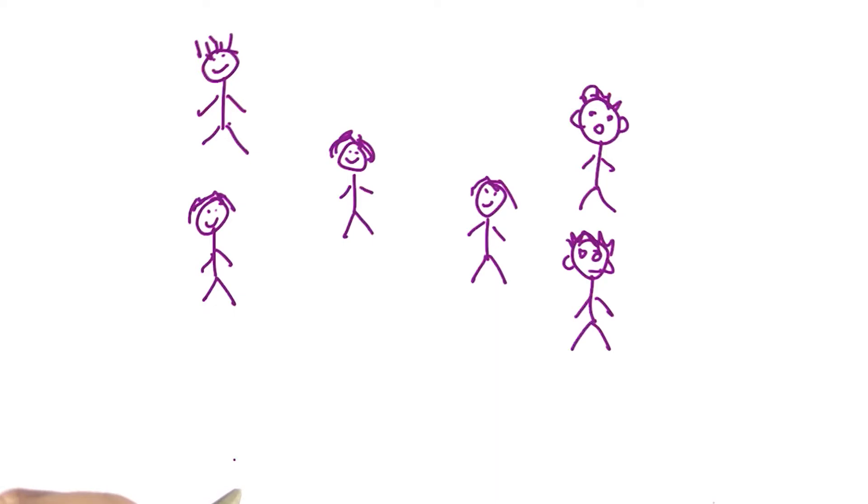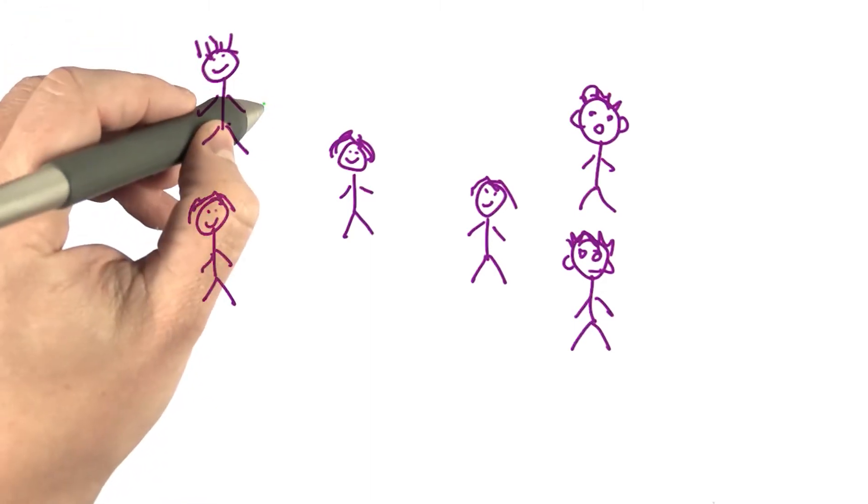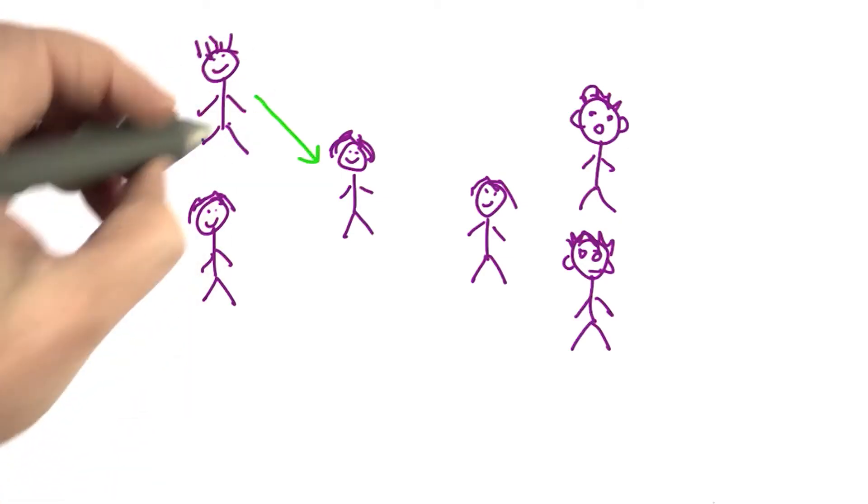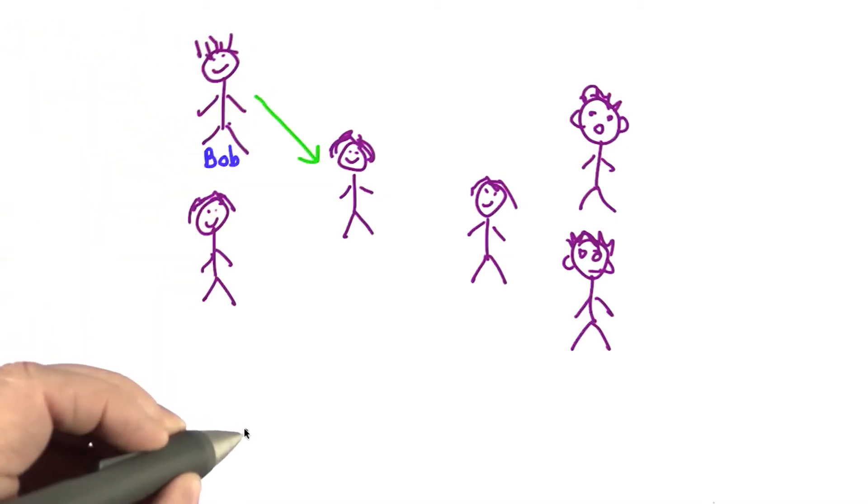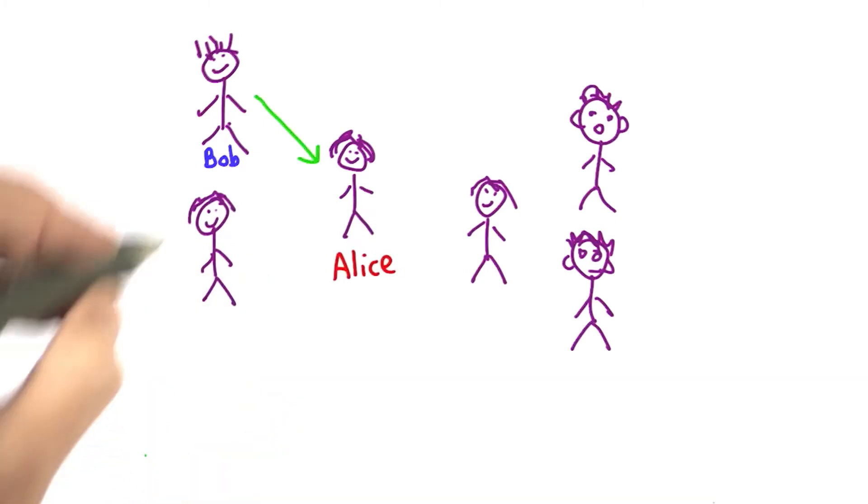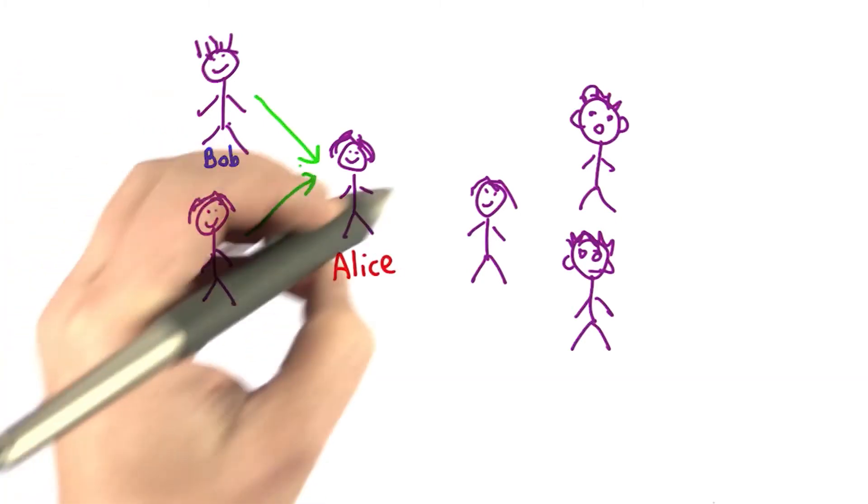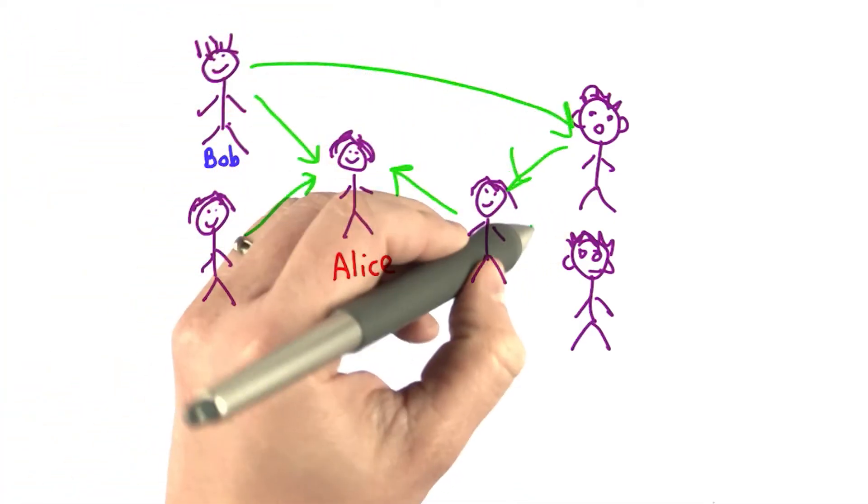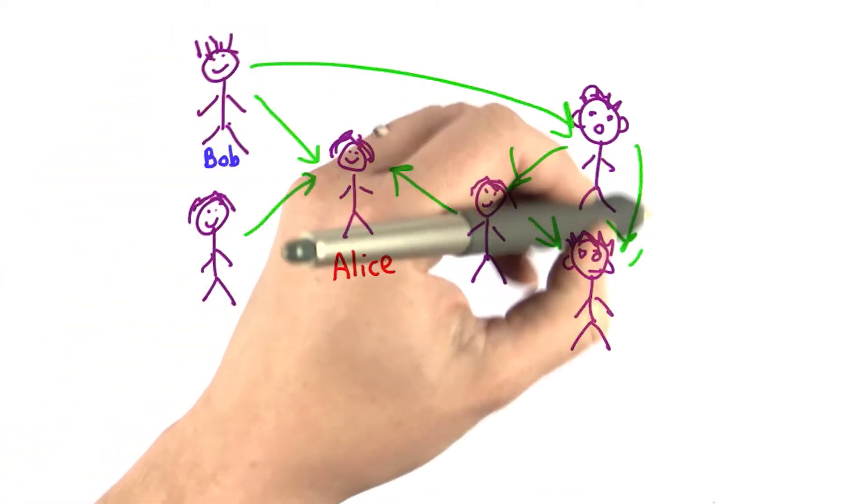The first step to deciding who's popular is looking at who has a lot of friends. So let's draw in some links that show who's a friend. And friendship links are one directional. Just because Alice is friends with Bob doesn't mean that Bob is friends with Alice. So we'll draw our links as arrows. So this means this person, we'll call him Bob, is friends with Alice. And let's say Alice has many friends. And let's say Bob is also friends with this person. They're friends with each other. We have lots of friendship links.